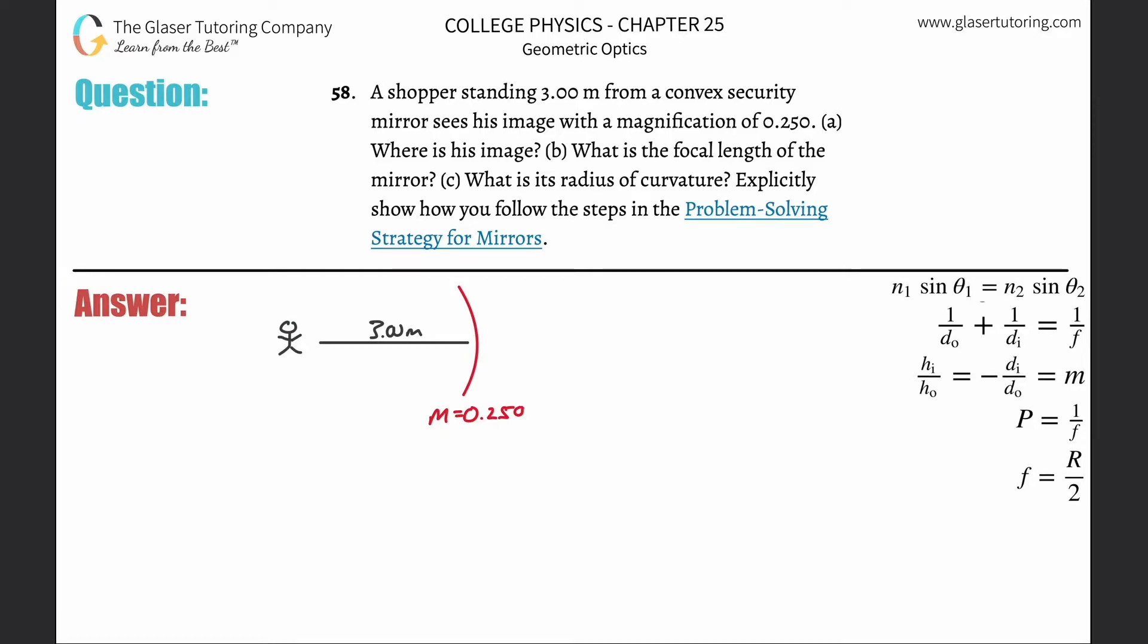Number 58: A shopper standing 3 meters from a convex security mirror sees his image with a magnification of 0.25. Letter a: Where is his image? I think what they're talking about is where is it in front of the mirror or in back of the mirror. The way we can figure that out is by identifying the sign of di. A negative sign implies behind, a positive sign will imply in front of the mirror.